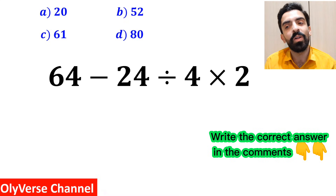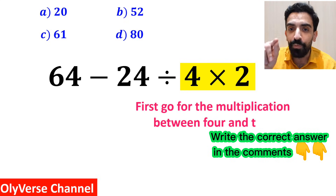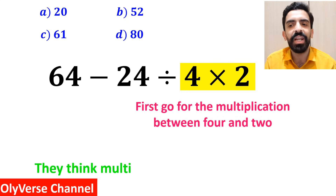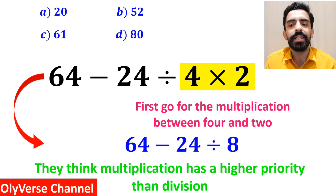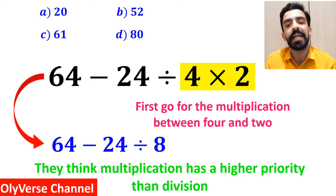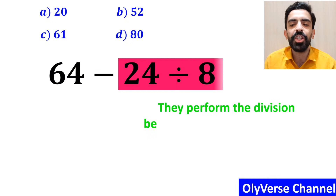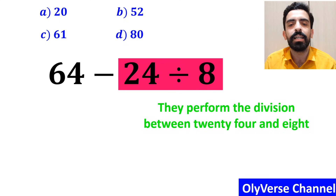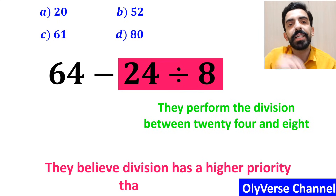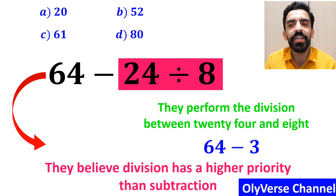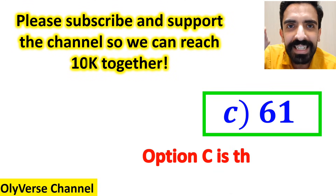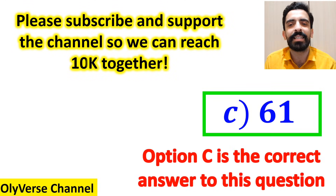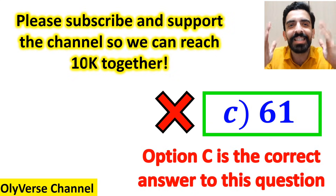Some other people, when solving this question, first go for the multiplication between 4 and 2 because they think multiplication has a higher priority than division. So they write this expression as 64 minus 24 divided by 8. In the next step, they perform the division between 24 and 8 since they believe division has a higher priority than subtraction, simplifying to 64 minus 3, which gives the answer 61. They conclude that option C is the correct answer — however, that's definitely wrong.